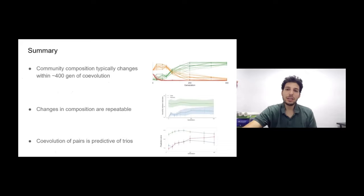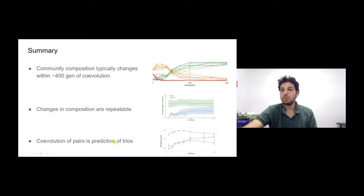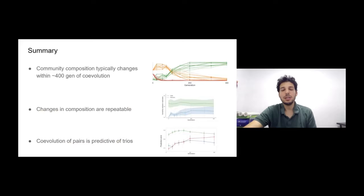To quickly summarize: by looking at hundreds of communities we could show that community composition typically changes within a few hundred generations of co-evolution; that these changes in composition are fairly repeatable; and that co-evolution of pairs is predictive of trios. That didn't have to be the case — it could have been that evolution occurring in pairs was different from that in trios — but that seemed to be fairly unusual in our data.